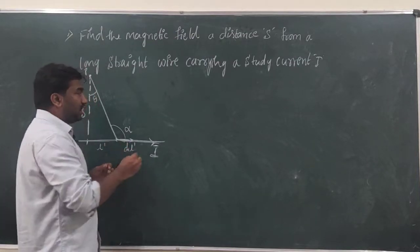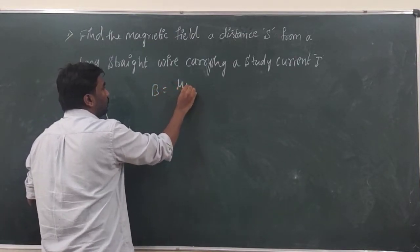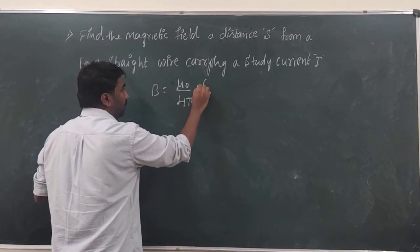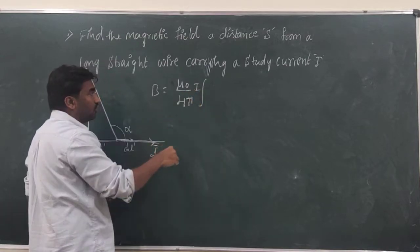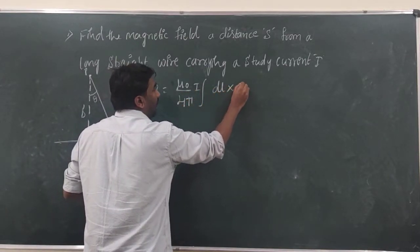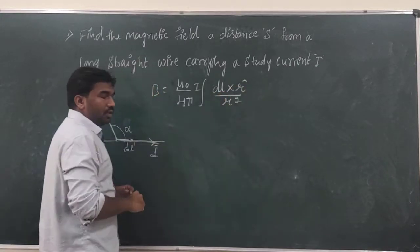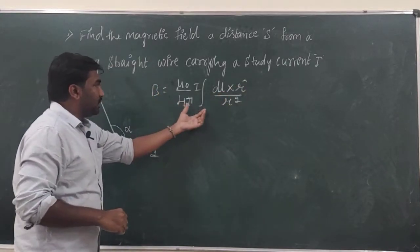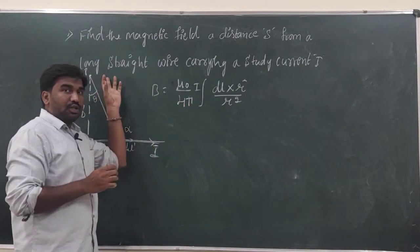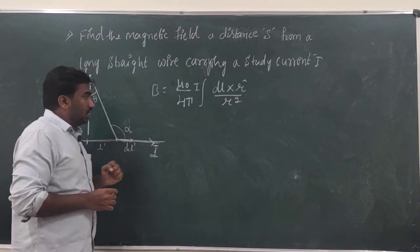We know that the Biot-Savart law gives an expression for a moving current which produces a magnetic field: B is equal to μ₀ divided by 4π, integration of i into dl cross r̂ divided by r². Using this expression we can easily calculate the magnitude of the magnetic field produced by this long current wire.